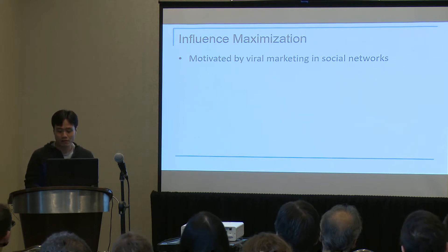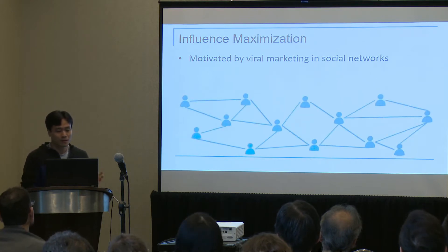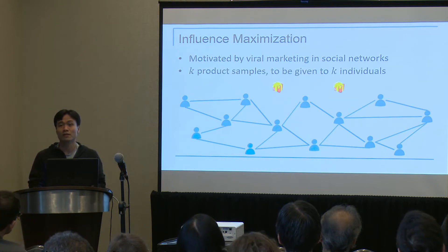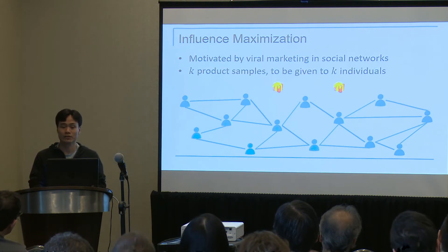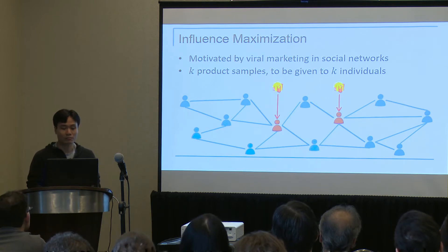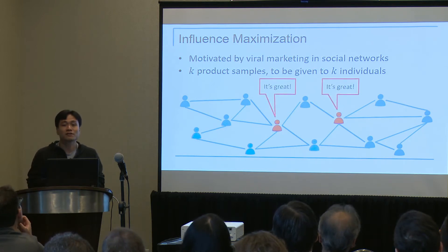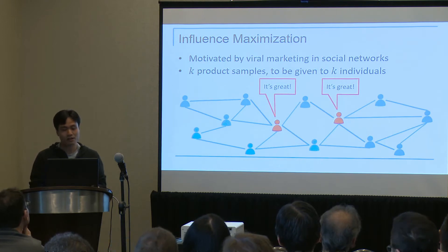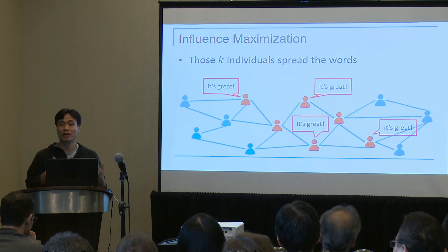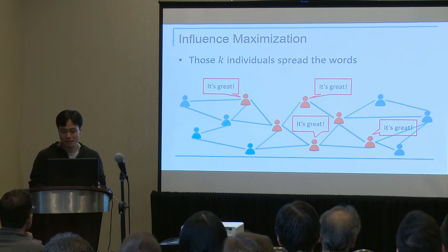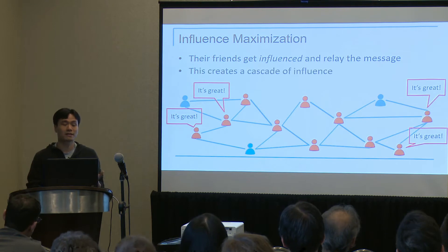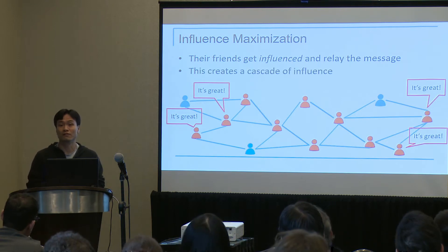The typical setting for the problem is as follows. We have a social network, and we have K product samples that we wish to give to K individuals. The purpose is to let those individuals try out the products, and hopefully they will say some good things about the product. Then some of their friends might be convinced, they'll relay the message, and this is propagated in a recursive manner, creating a cascade of influence to serve the purpose of viral marketing.